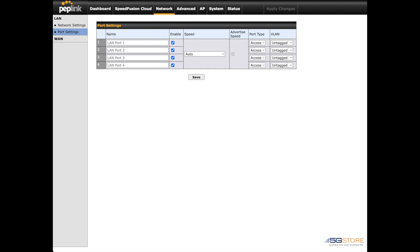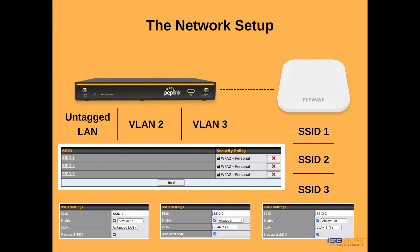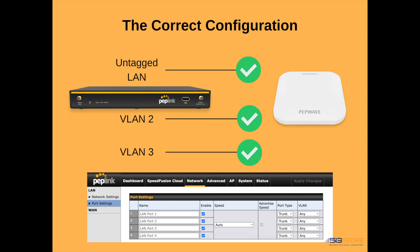The solution: we checked the port settings on the router to see how the port types were configured. Options are either trunk or access. The ports were found to be set as access, which means only one VLAN was functioning. However, since the access point was configured with multiple SSIDs using VLAN tagging, it caused confusion with the addressing. The port type simply needed to be changed to trunk and the VLAN then set to any, so the access point could connect wherever it needs.